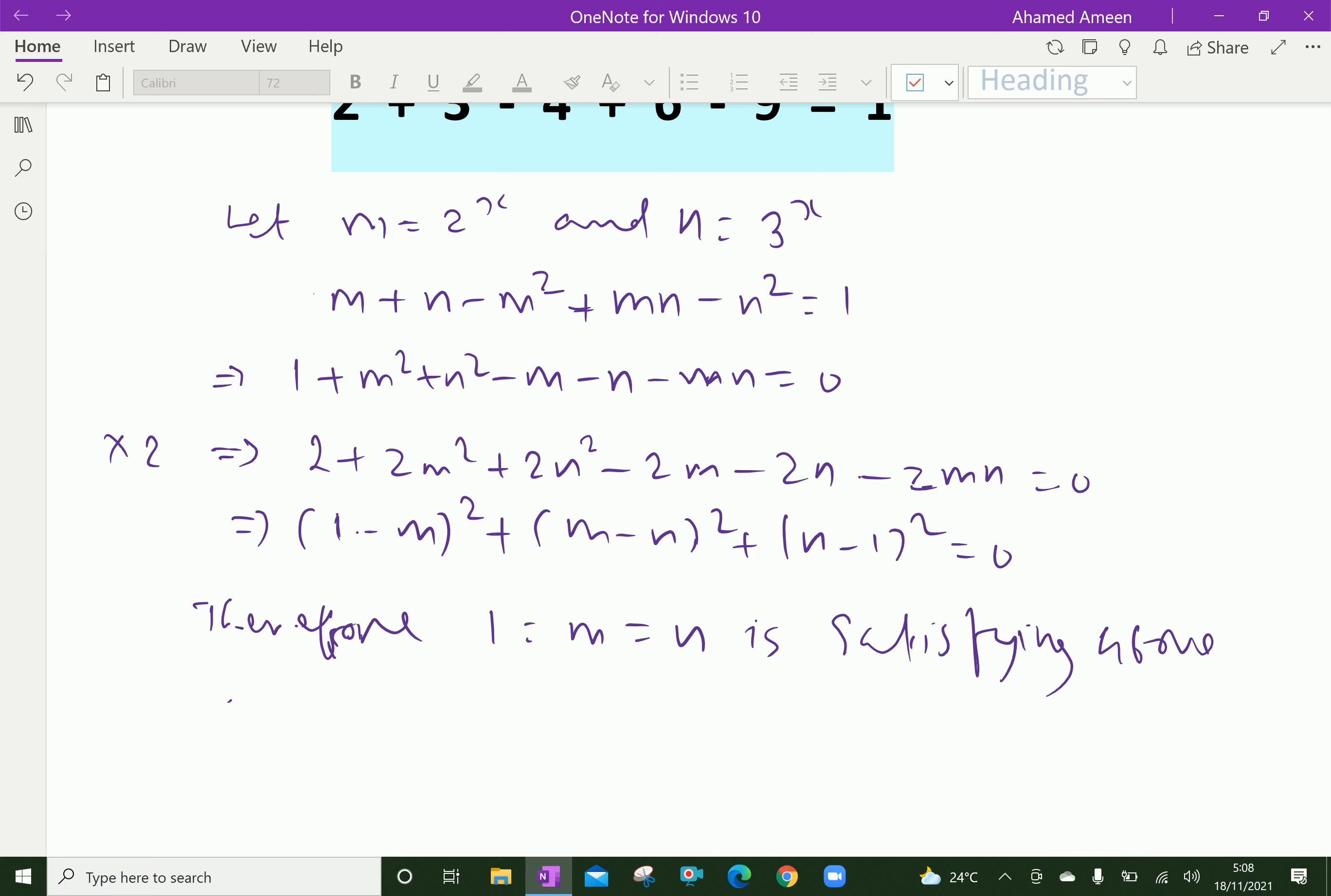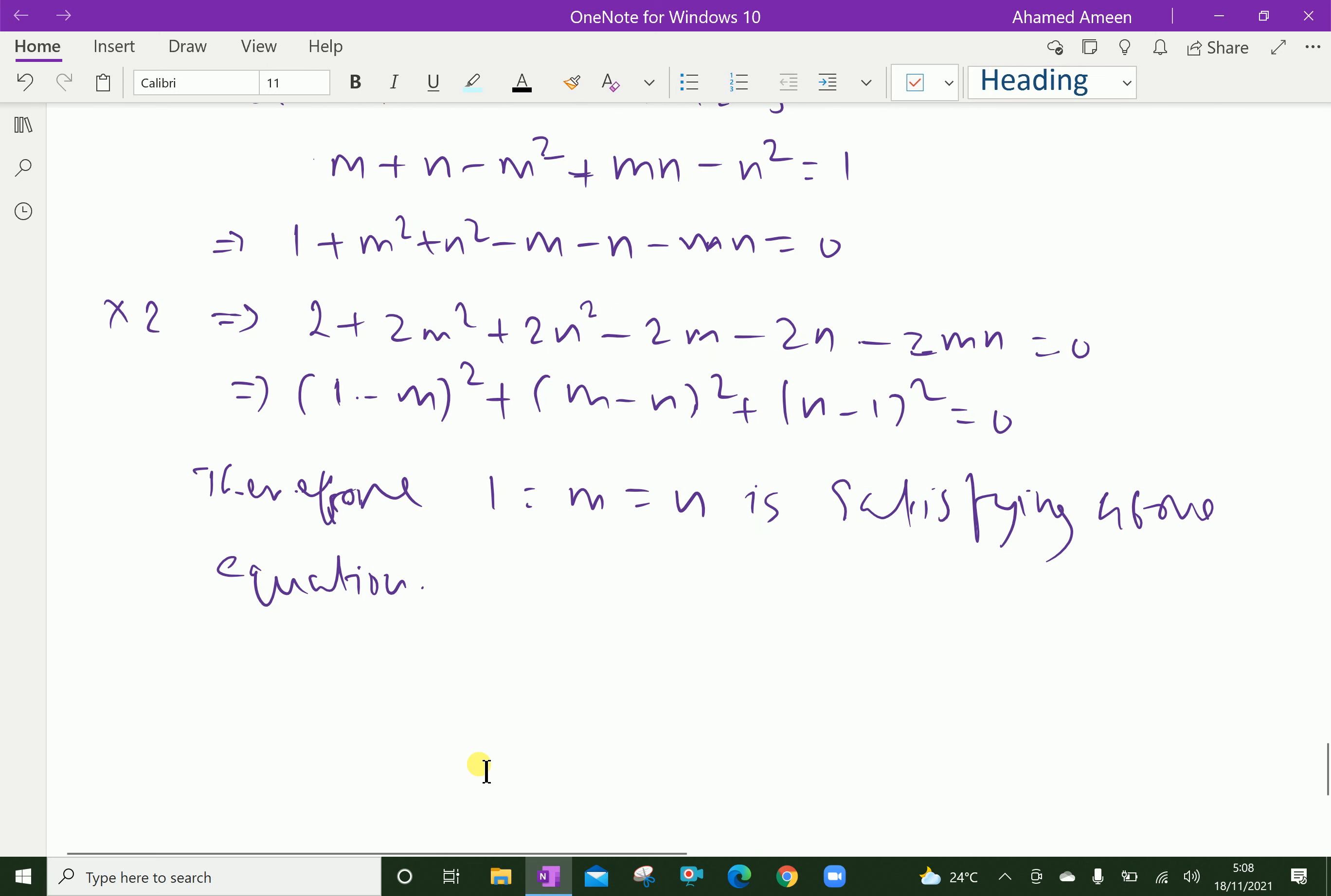That is, if you put 1 here, 1 minus m is zero, here also zero, here also zero. So it is only satisfied. Therefore, we can write 1 = 2^x = 3^x, which gives x = 0 is the only solution.